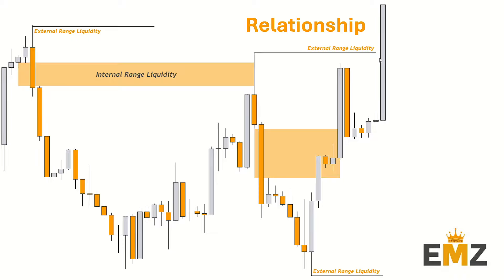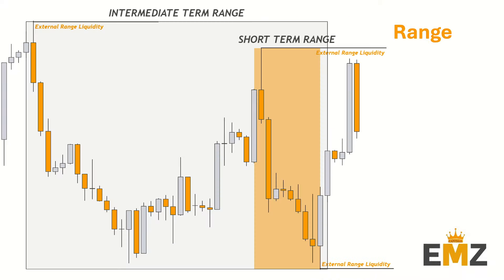From here, once we've swept this external range liquidity, I would presume market to come down, respect this fair value gap, and move higher, taking out this external range liquidity all the way up here. On your chart, there will be different types of ranges, but there are two main types we will discuss.